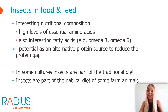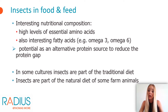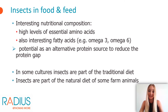That brings us to the next application of insects, namely in food and feed. Insects have an interesting nutritional composition for these applications. They contain high levels of essential amino acids, but also interesting fatty acids such as omega-3. Due to their high protein levels, they have potential as an alternative protein source to reduce the deficit in the European Union. Insects are already eaten by humans — in some cultures they even belong to the traditional diet. Also, some farm animals such as chickens naturally eat insects.